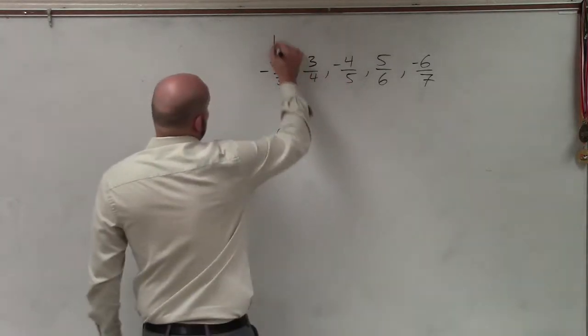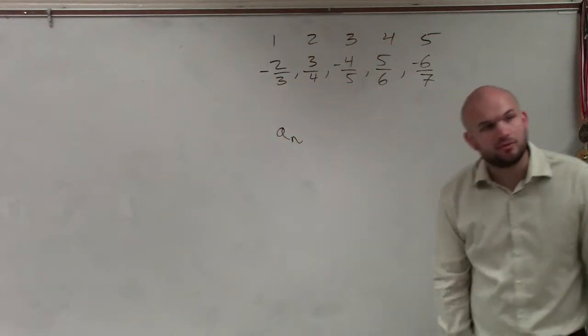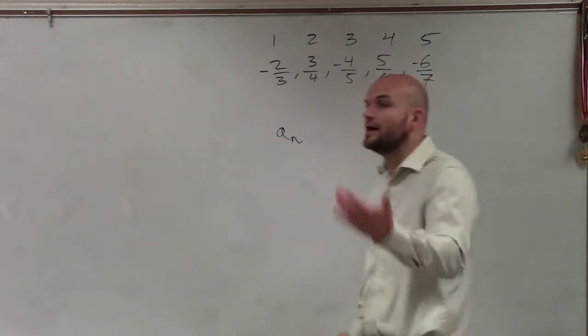So one thing we can do is label which numbers we have in the sequence: one, two, three, four, and five. So we have five terms in the sequence starting at number one.